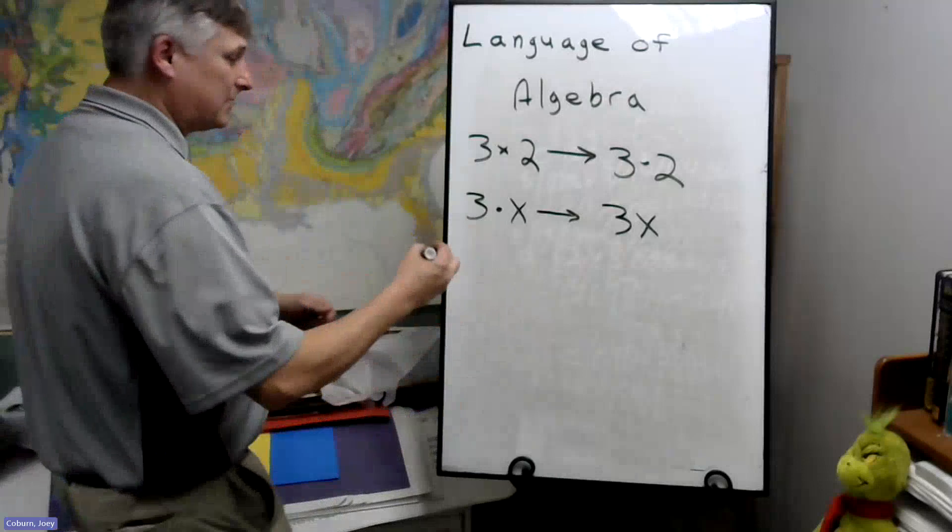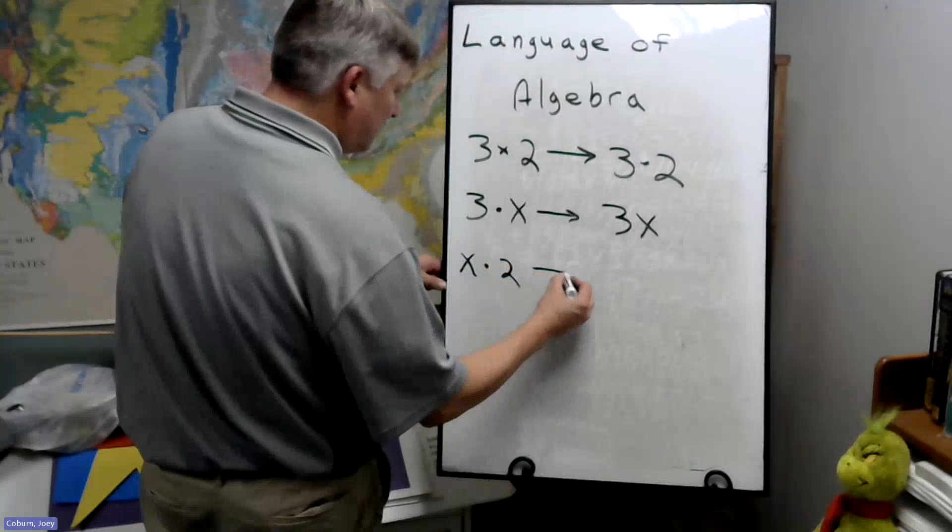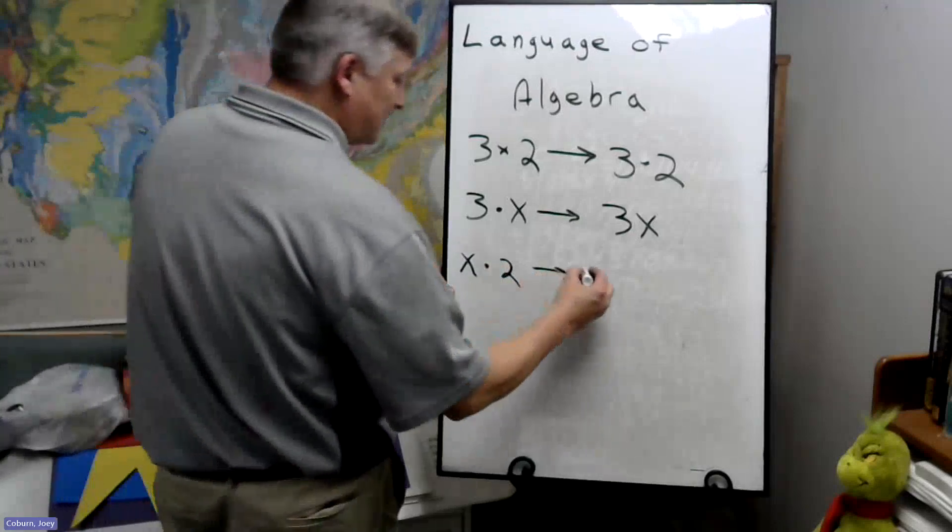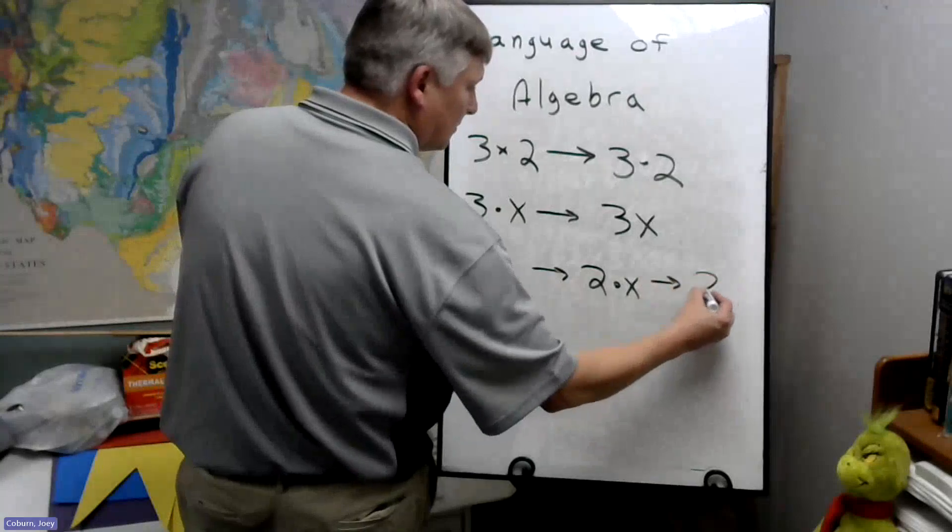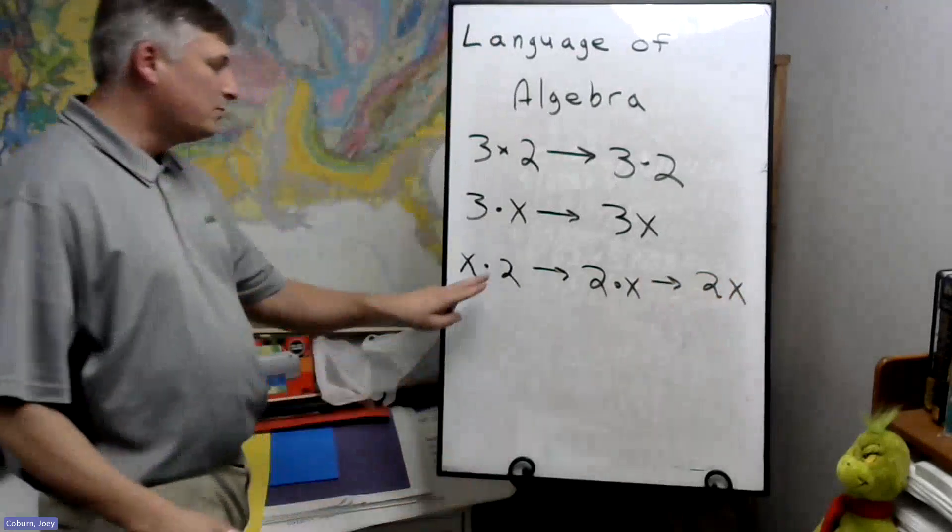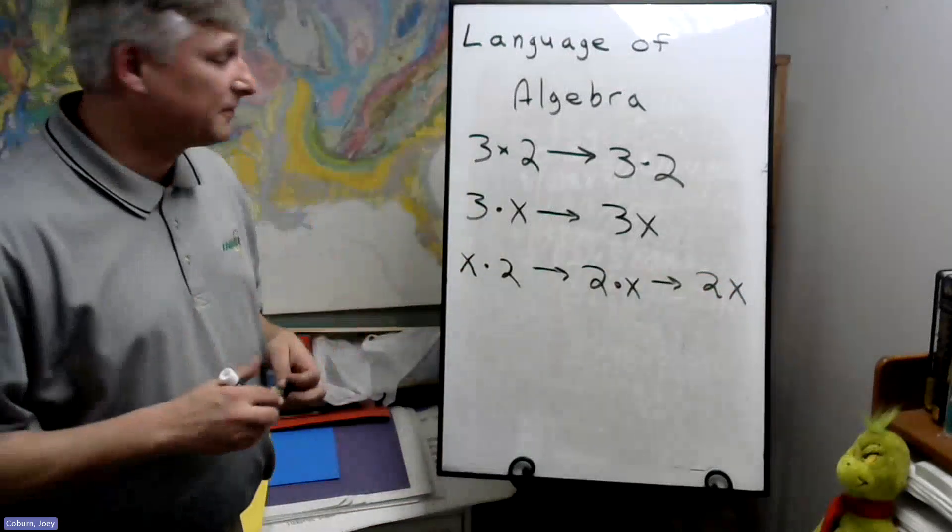So if you have something like this, for example, X times 2, we'll rewrite this as 2 times X, 2X. We'll move the 2 so it's in front of the X or to its left.